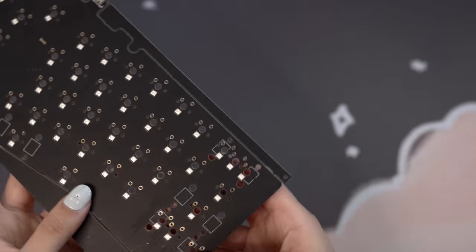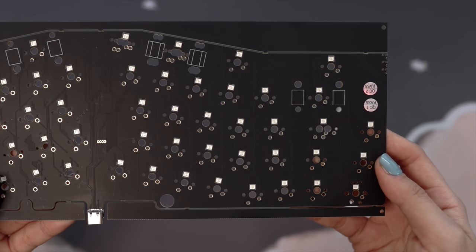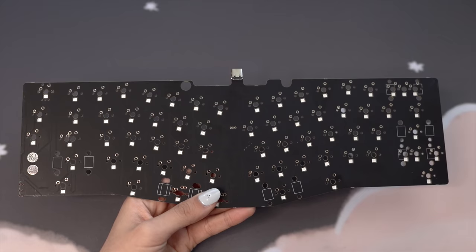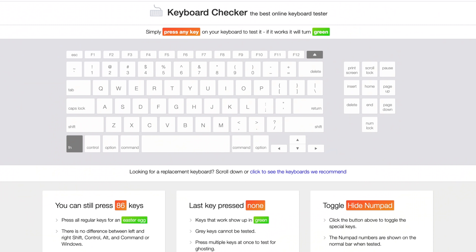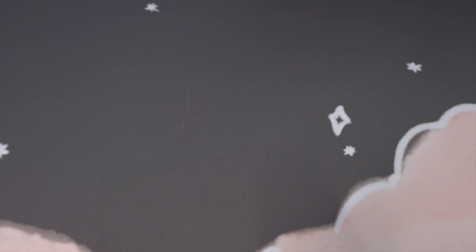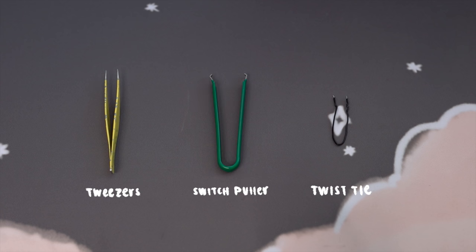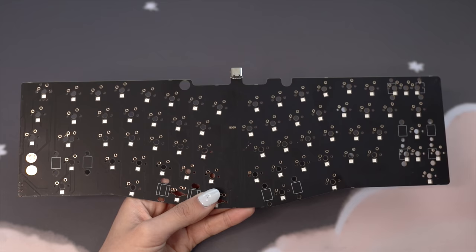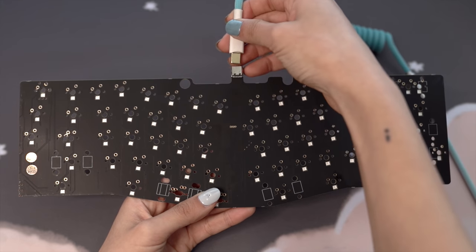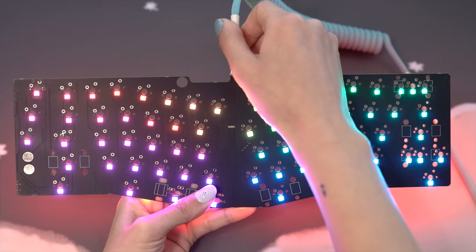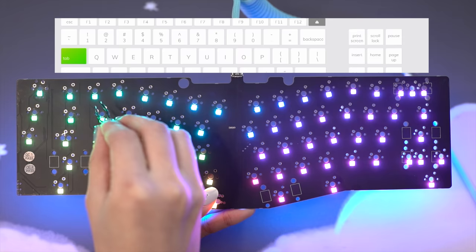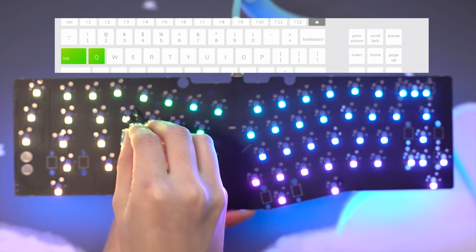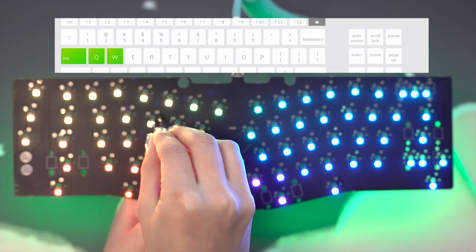Before you start your build, it's highly recommended to test your PCB in case your PCB has some issues. That way, you don't waste time building your board only to realize that it doesn't work. I like to use the website keyboardchecker.com. In order to test your PCB, you'll need something metal—tweezers, switch puller, twist tie, anything that can pass an electrical signal. You touch your metal object to the two holes for each switch. If the switch doesn't light up, your PCB may not be flashed or there might be an issue with the connector or a missing component or even broken trace if you're using a pre-soldered PCB. If the switch does light up, then you're good to go.